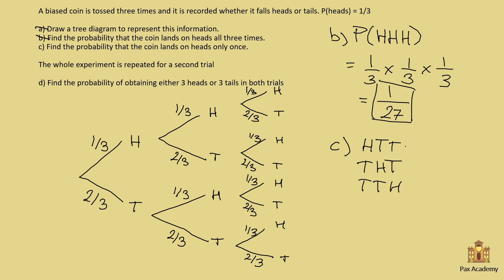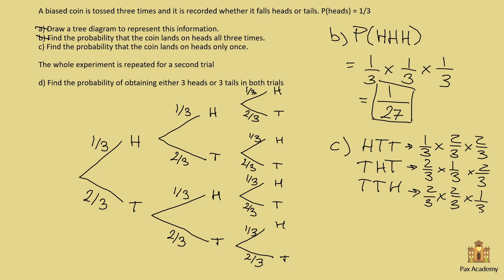So we need to find the probabilities for each of these outcomes. Getting heads then tails, tails from the tree diagram is one-third times two-thirds times two-thirds. And tails, tails, heads is two-thirds times two-thirds times one-third. If you multiply each set of probabilities and then add all three together, you get the answer for Part C.